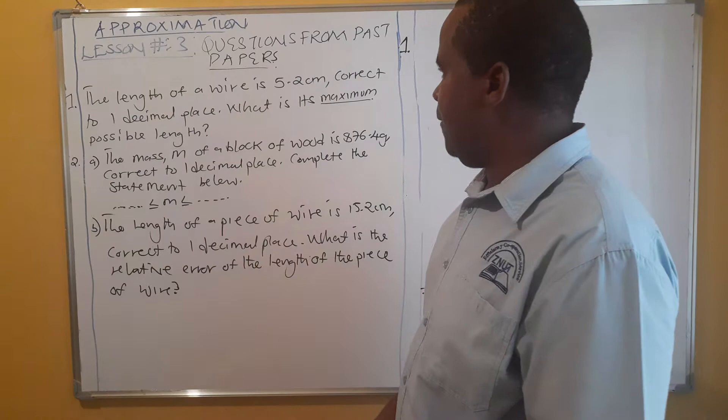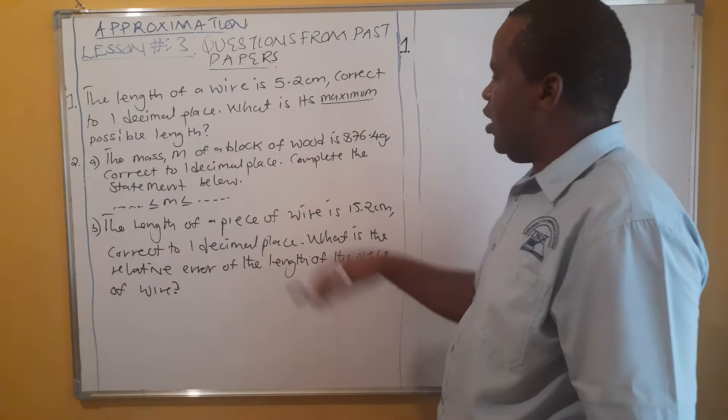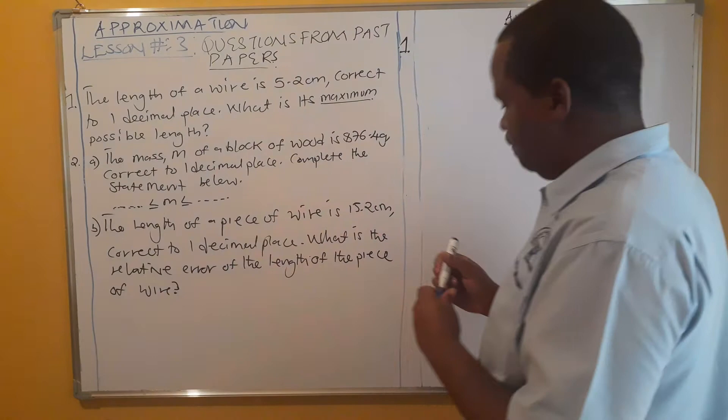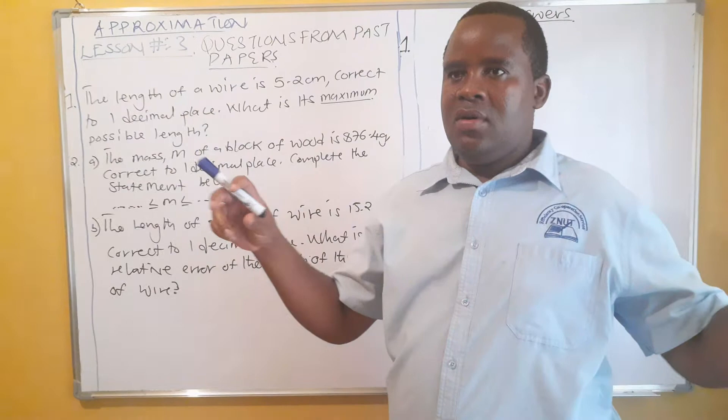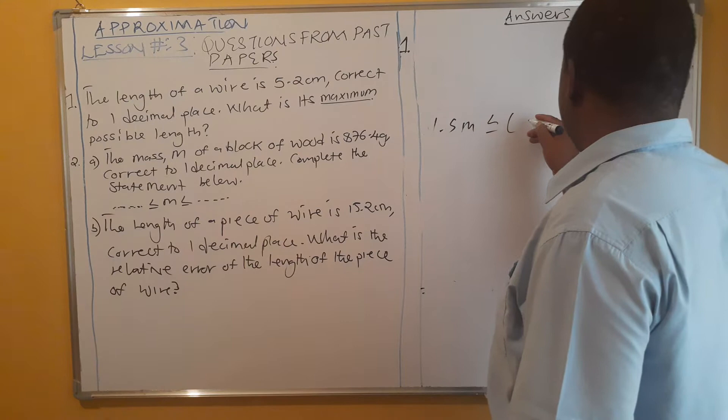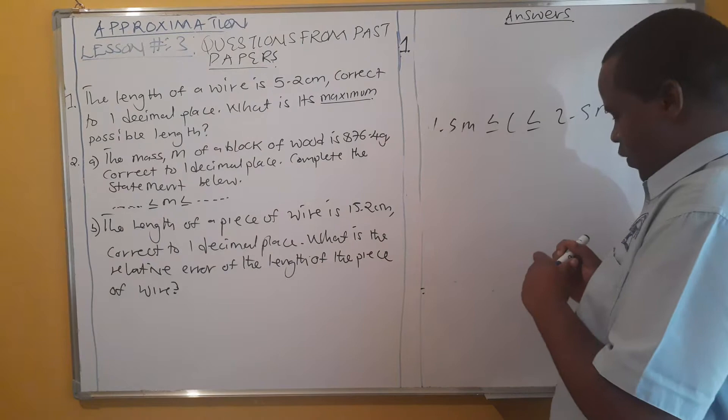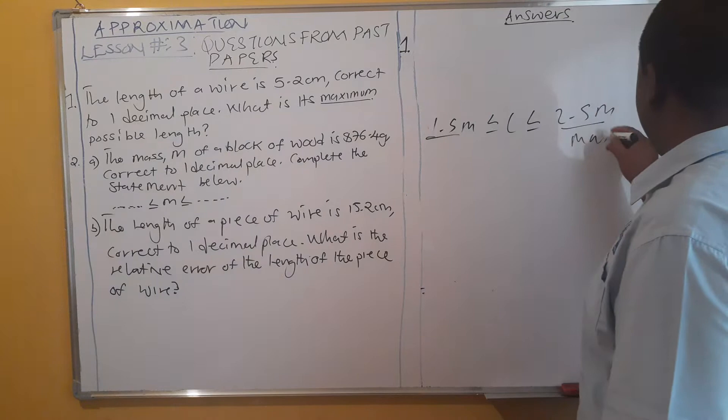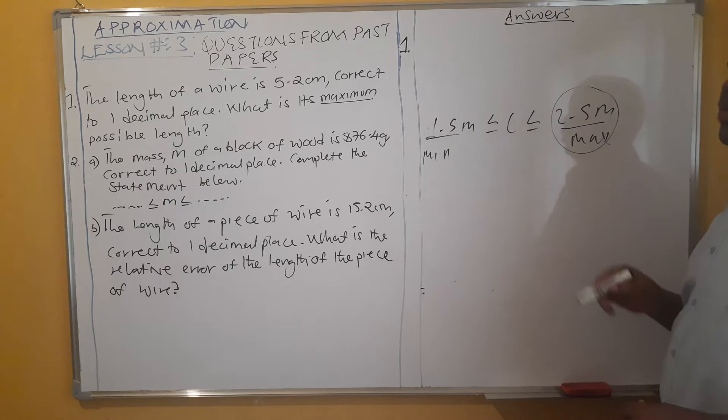The first question reads: the length of a wire is 5.2 centimeters, correct to one decimal place. What is its maximum possible length? By maximum possible length, it means we are recognizing the fact that we have one interval. So if you have one interval, 1.5 ≤ L ≤ 2.5, this is the lower limit and this is the upper limit. The question is asking us to get the upper limit.